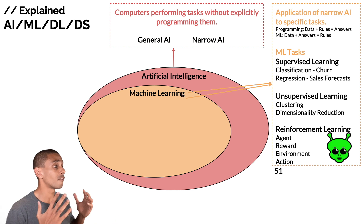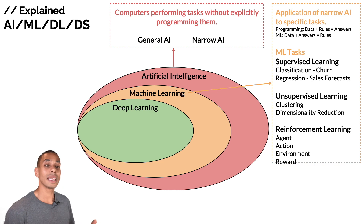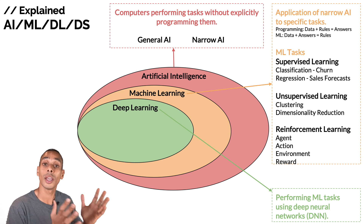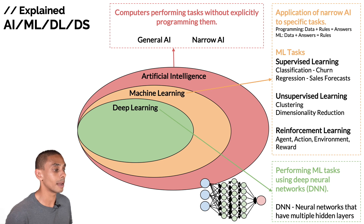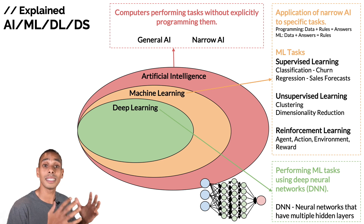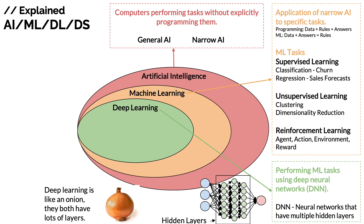That takes care of machine learning. Now we're going to delve a little deeper into deep learning. Deep learning is a subset of machine learning, and it's to do with performing machine learning tasks using deep neural networks. Deep neural networks are networks that have multiple hidden layers. If you've ever seen a diagram like this, it's a representation of a neural network — specifically a deep neural network because it has multiple hidden layers. The best way to remember deep learning is that it's just like an onion: it has multiple layers, a little bit like Shrek.